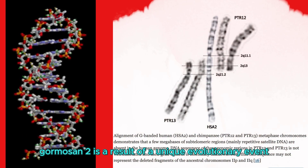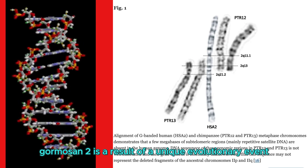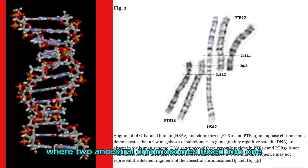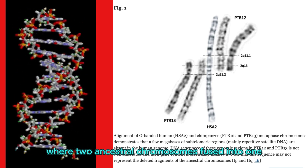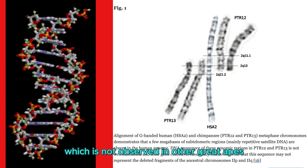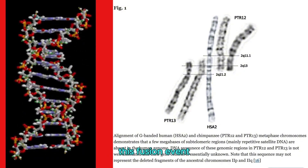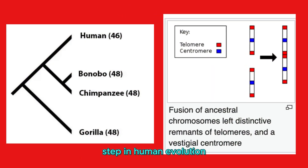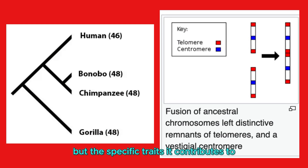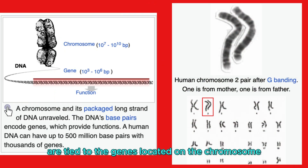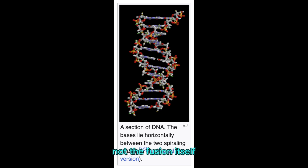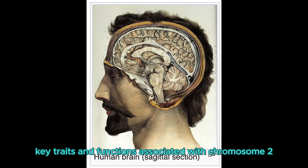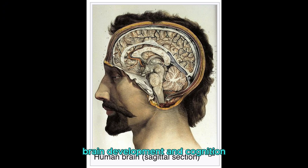Chromosome 2 is a result of a unique evolutionary event where two ancestral chromosomes fused into one, which is not observed in other great apes. This fusion event is believed to have been a significant step in human evolution, but the specific traits it contributes to are tied to the genes located on the chromosome, not the fusion itself.